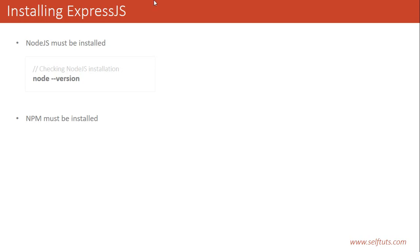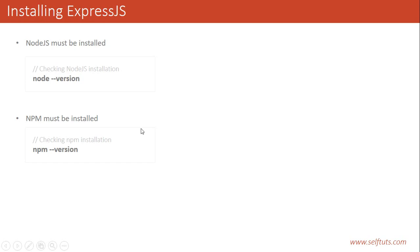When you install Node.js, then by default npm or the node package manager is installed in your system. To see if npm is present in your system or not, you need to check npm -version. To install Node.js you can go to the Node.js website and see how to install based on your system, whether it is Windows, Mac, or Linux. These two things must be present before installing Express.